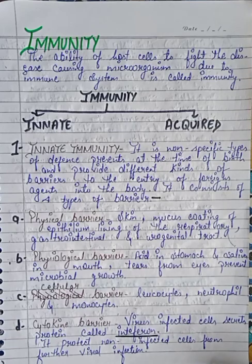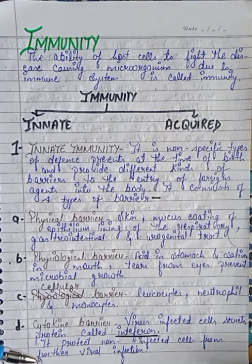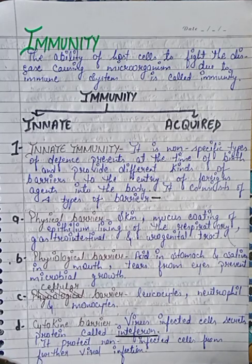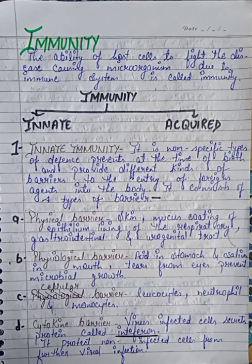Third barrier is the cellular barrier — leukocytes, neutrophils and monocytes. Fourth is the cytokine barrier. Virus-infected cells secrete a protein called interferon. When a virus infects some cells, the infected cells secrete this protein called interferon, which protects non-infected cells from further infection.